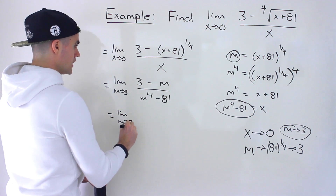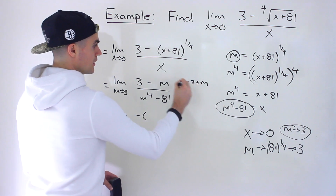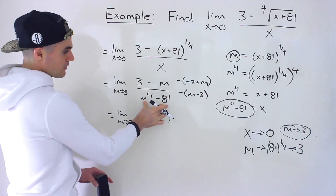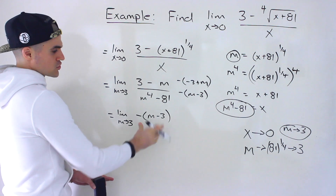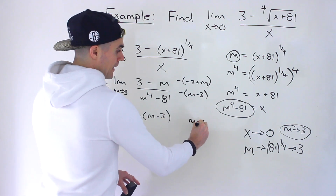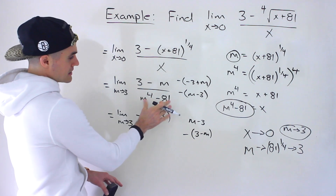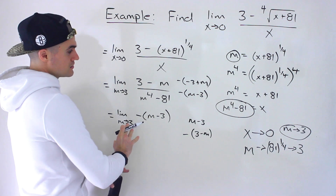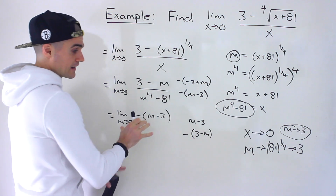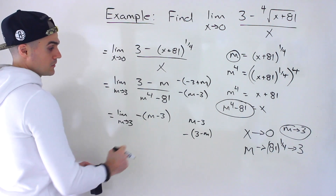In the numerator, I'm going to take out a negative, giving us negative times m minus 3. The reason is that once we factor the denominator, one of the terms will be m minus 3. You could also factor out the negative from the denominator later — it doesn't matter. Either way, there's going to be a negative somewhere. I just reconstructed the numerator so the m goes first, but you can factor out the negative later from the denominator instead.